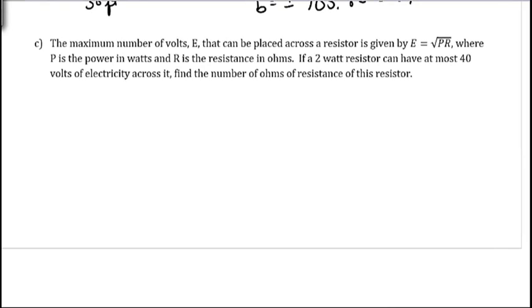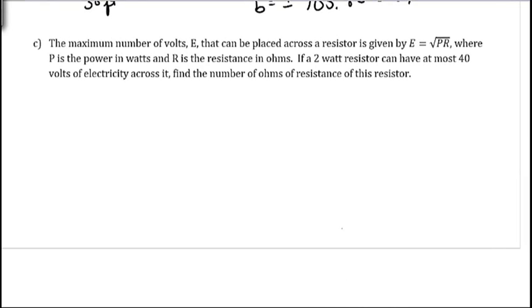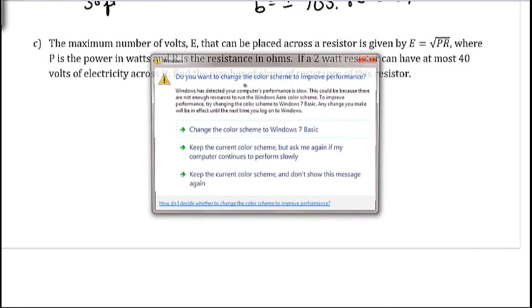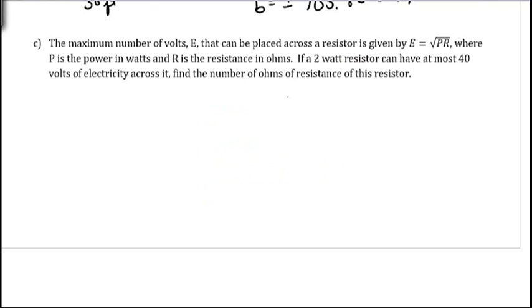And our last one here. The maximum number of volts E that can be placed across the resistor is given by E equals the square root of PR. Where P is the power in watts and R is the resistance in ohms. If a 2 watt resistor can have at most 40 volts of electricity across it, find the number of ohms of resistance of this resistor.